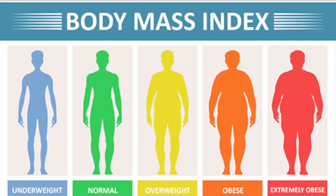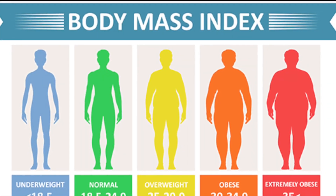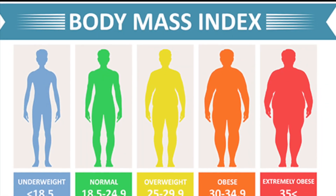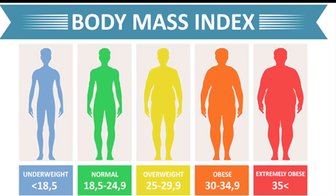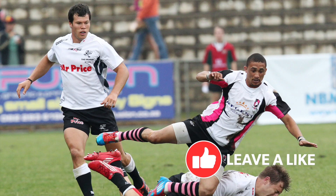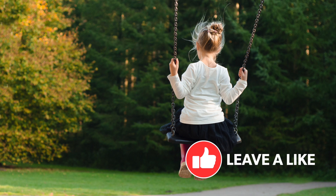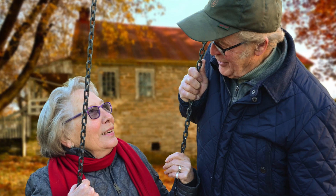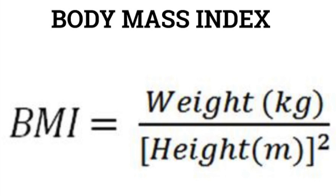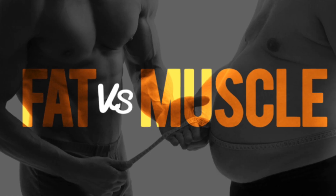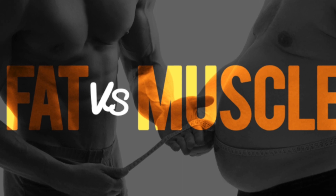BMI categories are generally regarded as a satisfactory tool for measuring individuals, but there are many exceptions, especially athletes, children, and the elderly. This is because the formula for BMI takes the weight of an individual as the main metric, but it does not take into consideration the difference between fat and muscle.